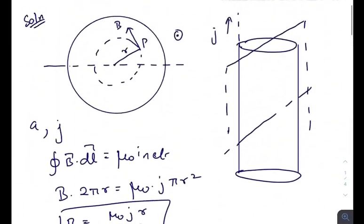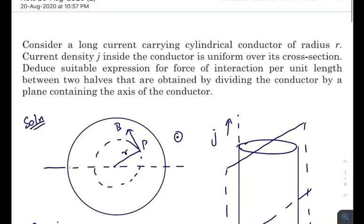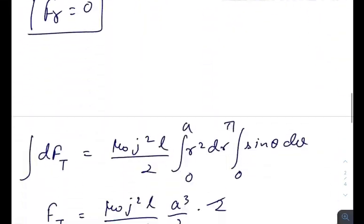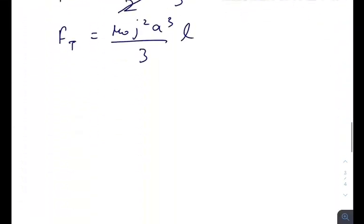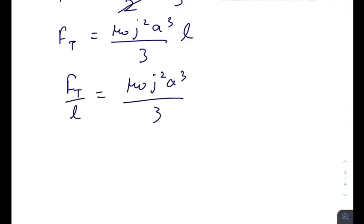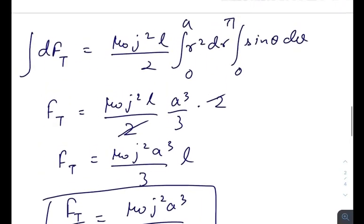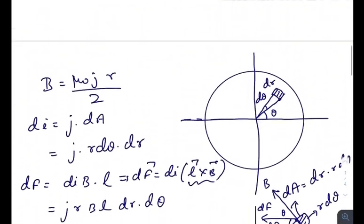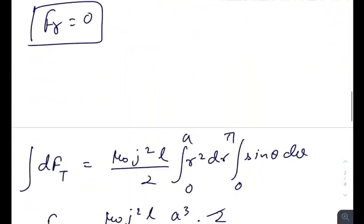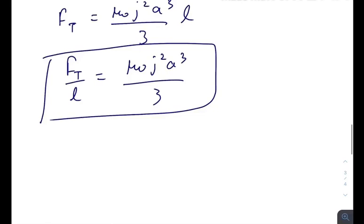So F_tangential equals μ₀j²a³ divided by 3, times l. The question asks for force per unit length, so the final answer is F_t divided by l, which equals μ₀j²a³ divided by 3. Since the radial force is zero, we don't have to worry about it. I hope you found this video informative.